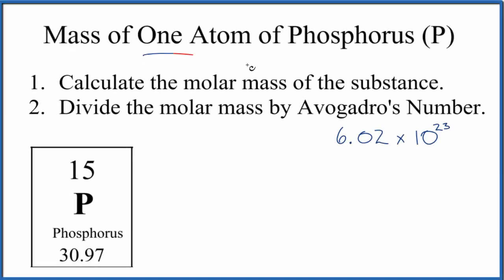Let's find the mass of one atom of phosphorus. Really all we're doing is taking the atomic mass - this is the average atomic mass - and dividing that by Avogadro's number.